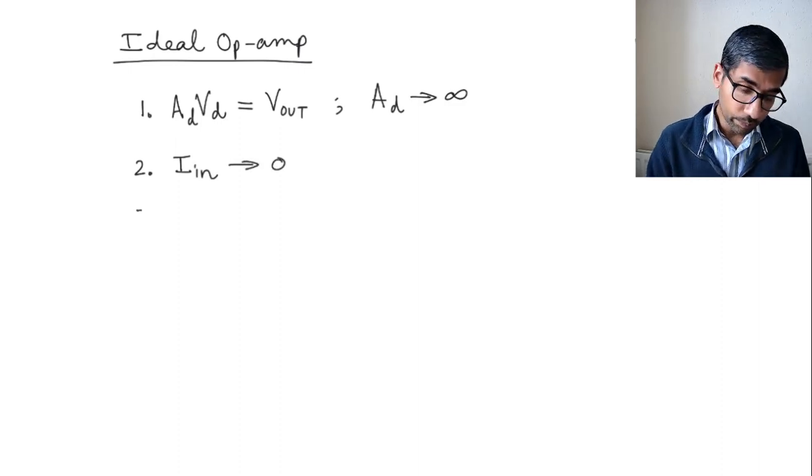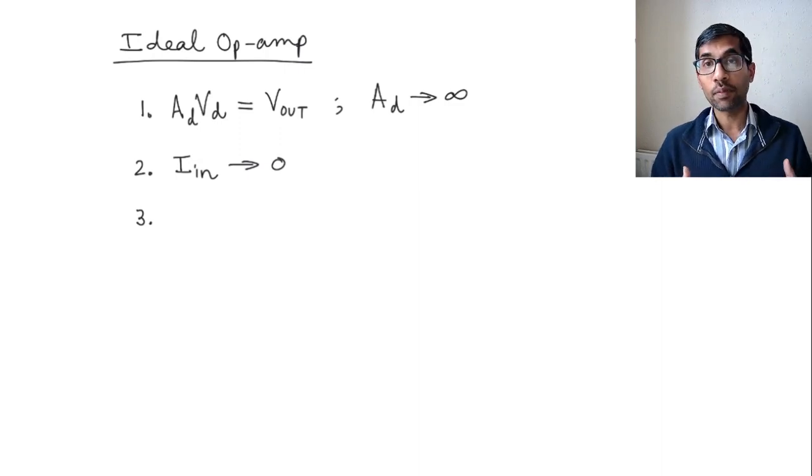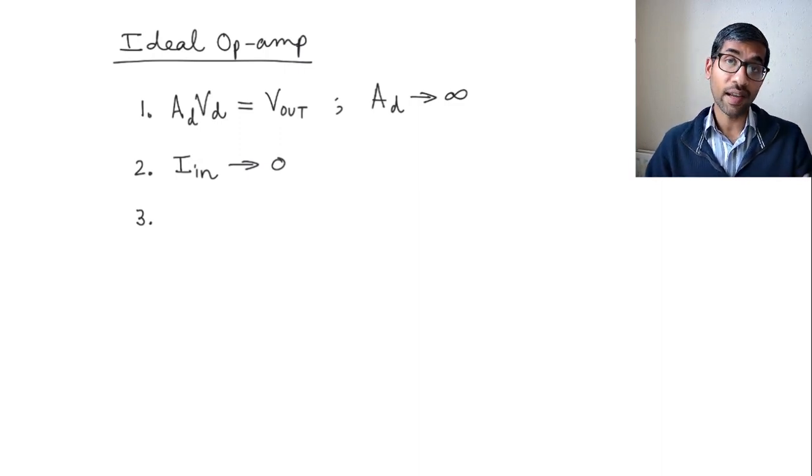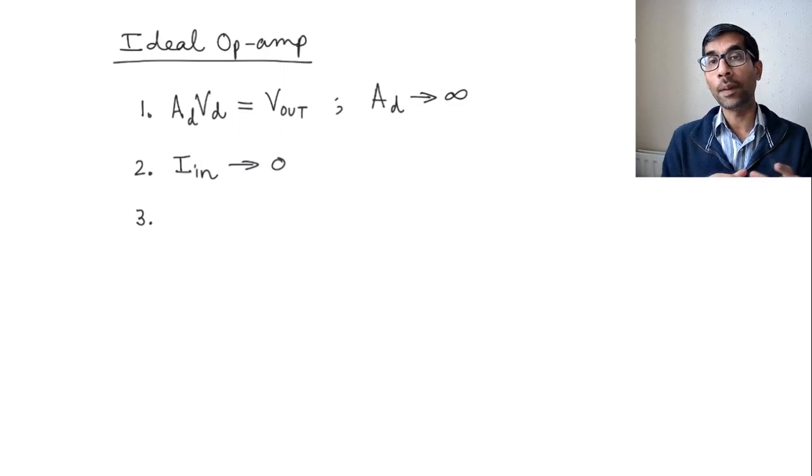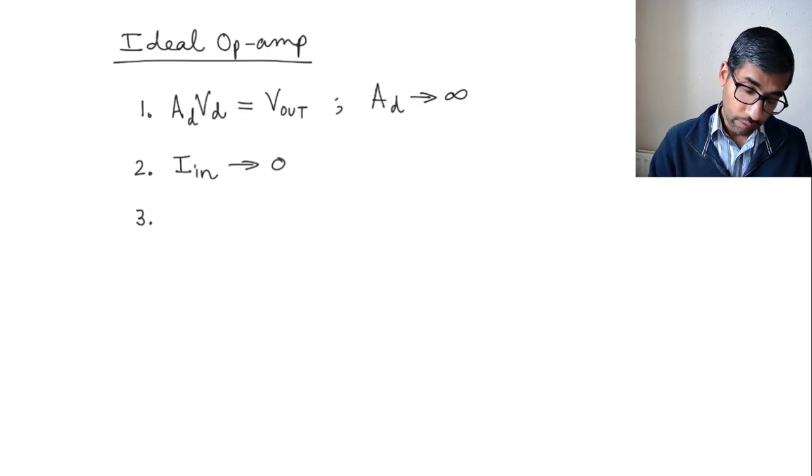And lastly, the third assumption is that the op-amp can supply as much current as any output circuit would require. That means the op-amp does not get loaded because of a circuit that comes after it.